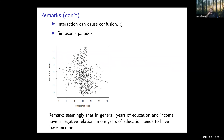Professor Sang makes the point that interaction can cause confusion, and she's certainly right. Simpson's paradox is a pretty good example, and you find it in the context of various use cases.